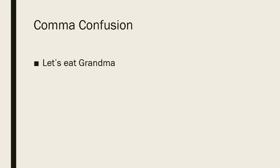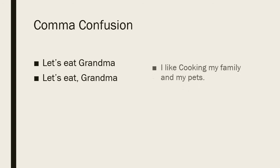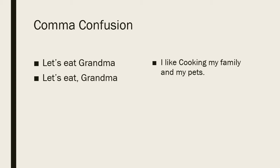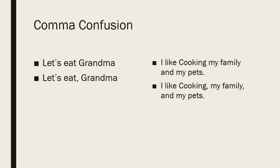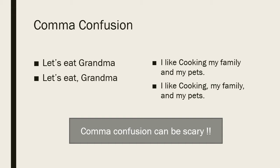Look at this example: somebody said 'Let's eat grandma' — actually he was trying to talk to his grandma so they could eat together, but by missing out a comma it seems like somebody wants to eat the grandma. Similarly, someone said 'I like cooking my family and my pets.' Because a comma is missing, it seems he likes cooking his own family and pets. With commas, we understand his three interests are cooking, family, and pets. Comma confusion can be very scary.